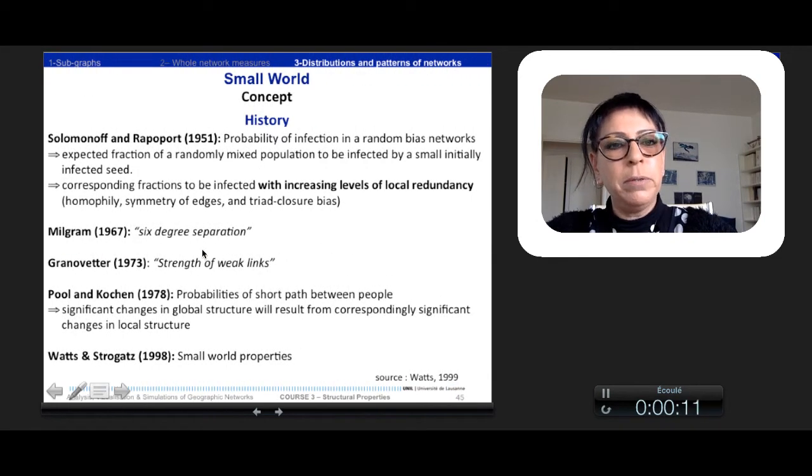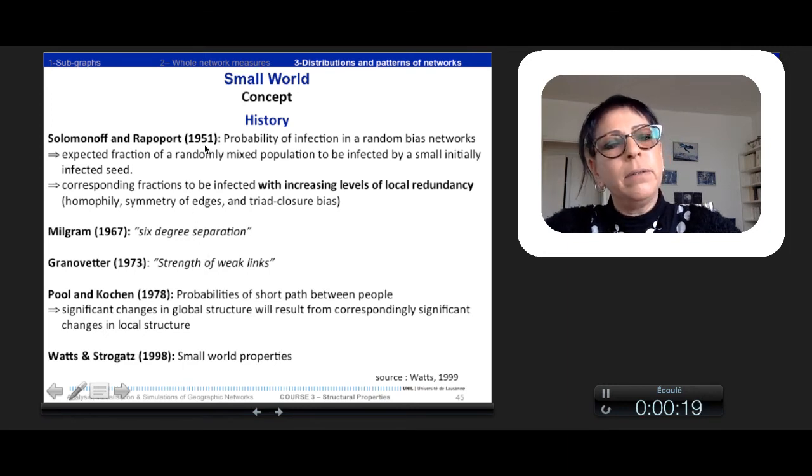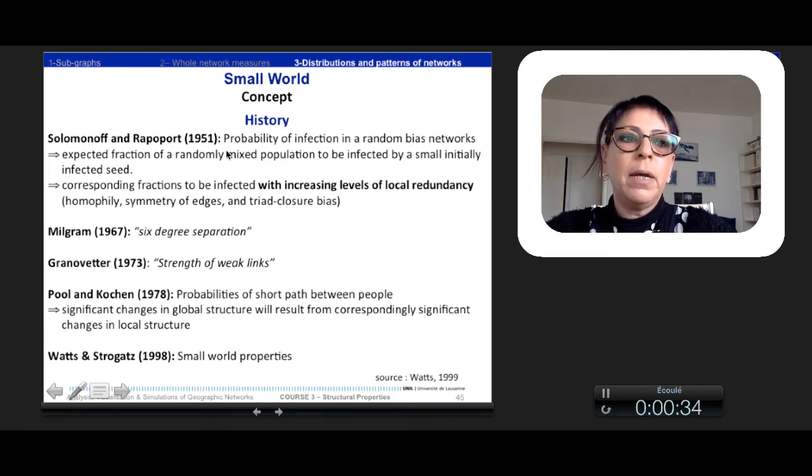So the small world concept is quite new and developed in the last decades, but has got a large history. The first ones to underline this kind of concept are Solomon and Rappaport in the 50s, who calculated the probability of infection in random graphs.